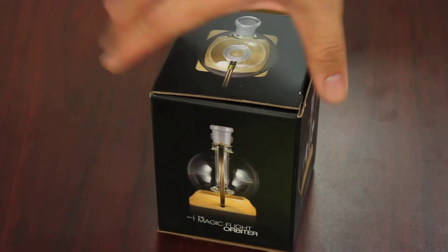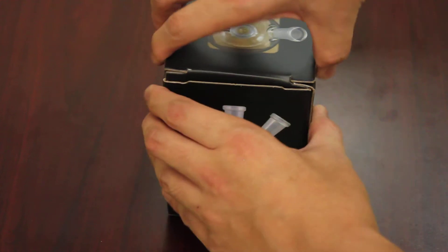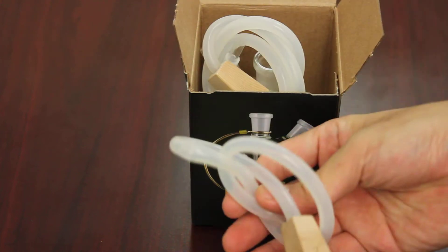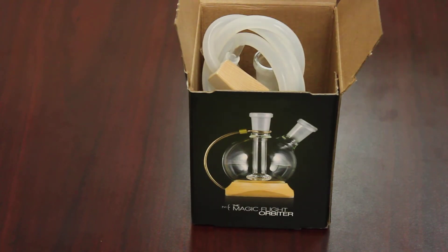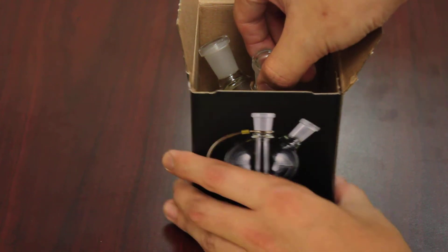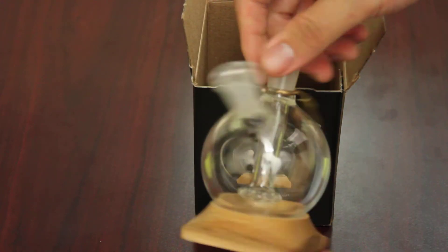This is your Magic Flight Orbiter. The kit includes an 18-inch water pipe whip, a 27-inch water pipe whip, and lastly, the Magic Flight Orbiter.